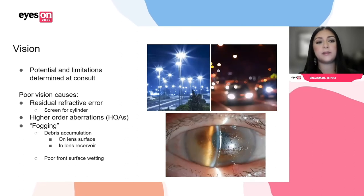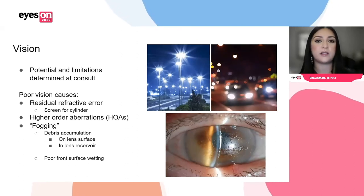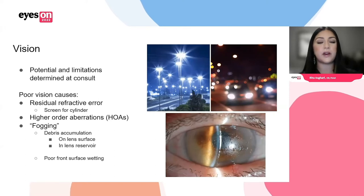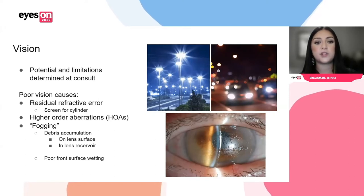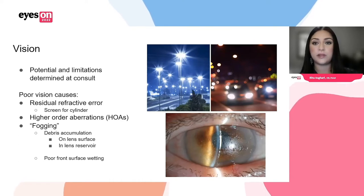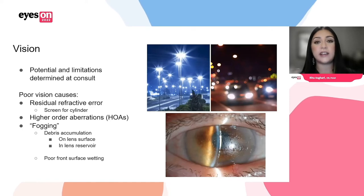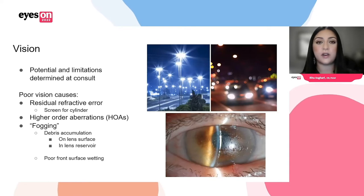Vision limitations should be determined at the consult visit, but there are a number of other reasons patients may have limitations in vision: residual refractive error, higher order aberrations — a big one for your patients with corneal ectasia and irregular corneas — and fogging, which is huge, especially for your ocular surface disease patients.